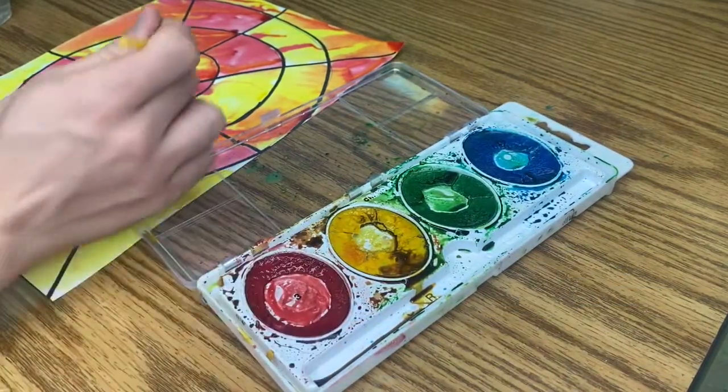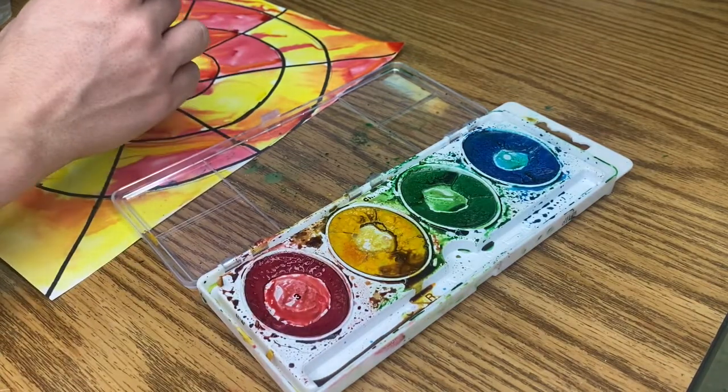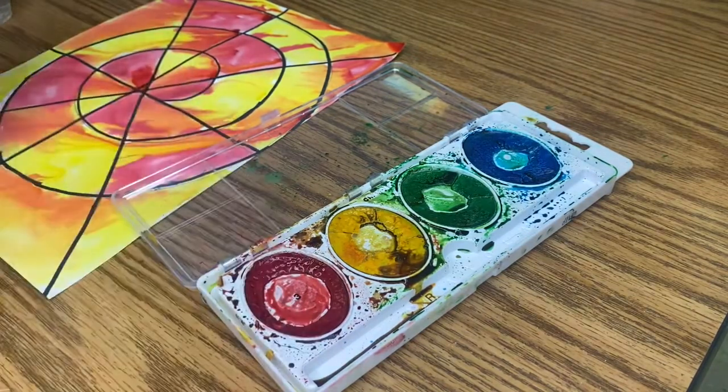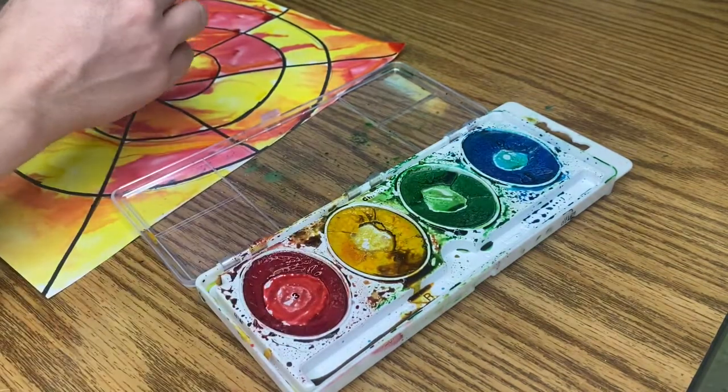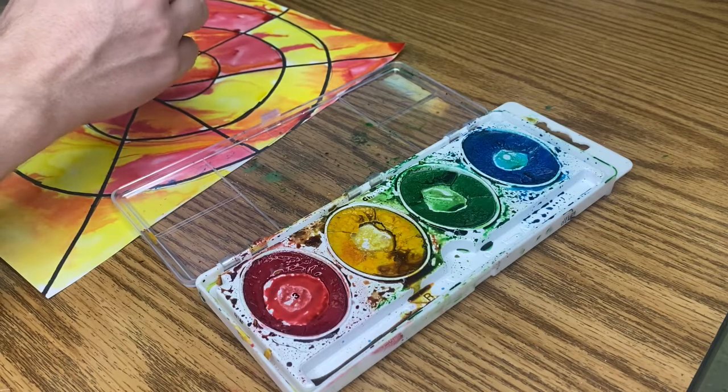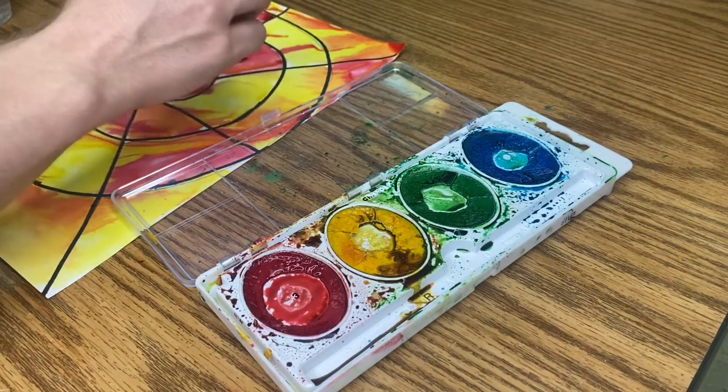I'm going to use this red. Make sure you cover up all those white spots. Now, can I go over an area again? Absolutely. If you don't like a color, you can go over it again. Maybe I can make this area a little bit brighter with a little bit more red.